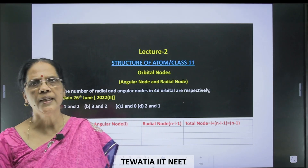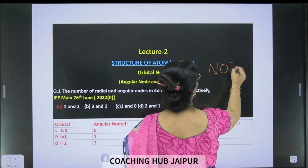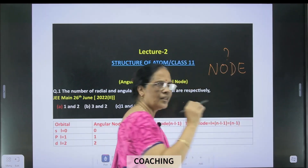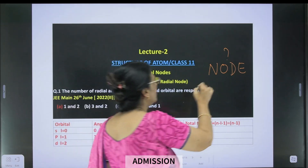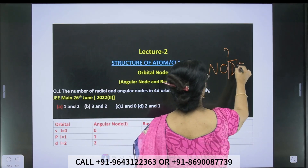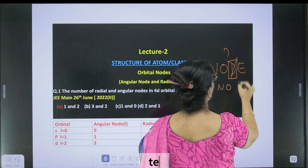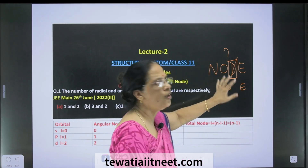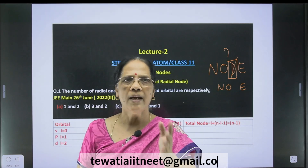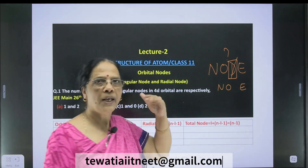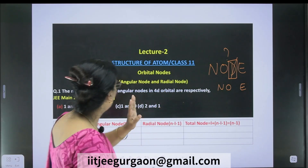Now the question is: what is a node? If you delete the 'd' from 'node', you get 'no electron'. So what is a node? It means no electron. If it is a nodal point, it is the point at which there is no electron. If it is a nodal plane, it is the plane where there is no electron. So node means no electron — we have to understand this.